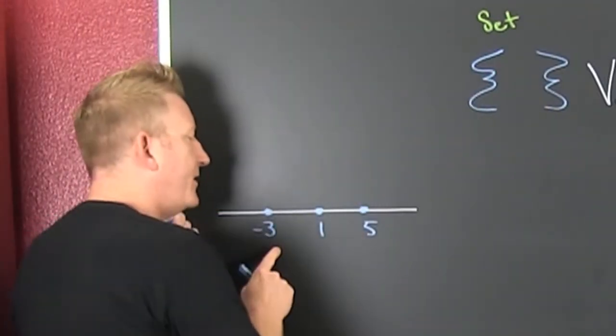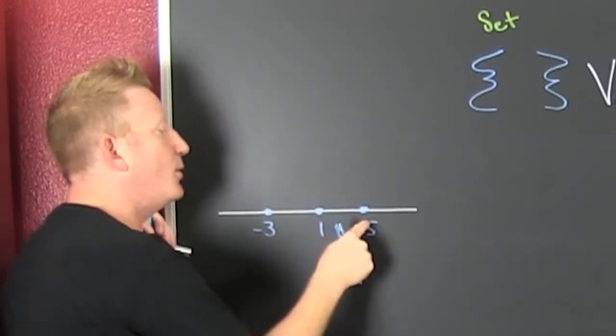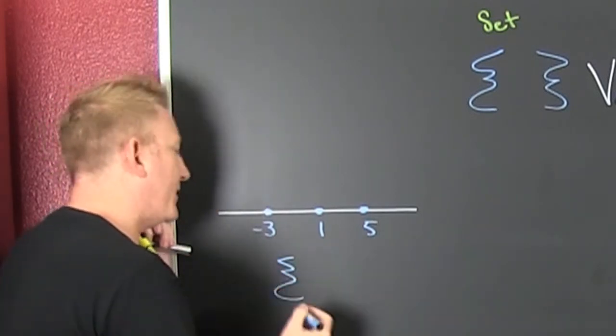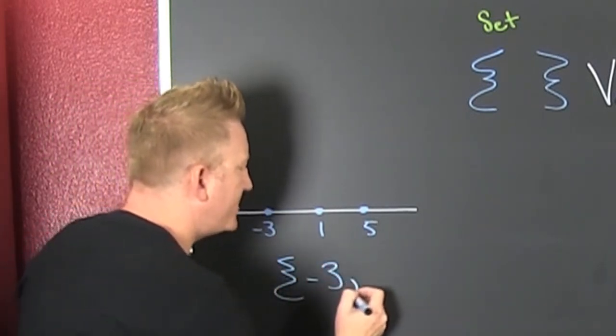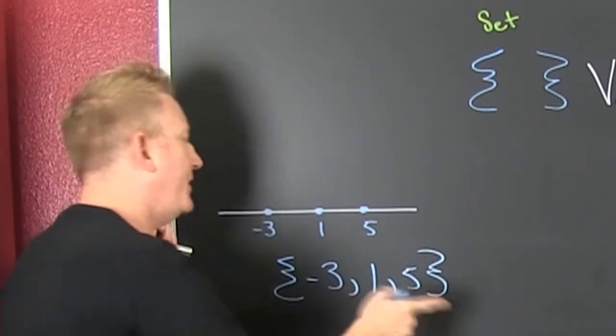Now, over here, to be clear, we use the curlies when we have individual values. We don't have a whole range. So then I put my curlies, a minus 3, a 1, and a 5 curlies.